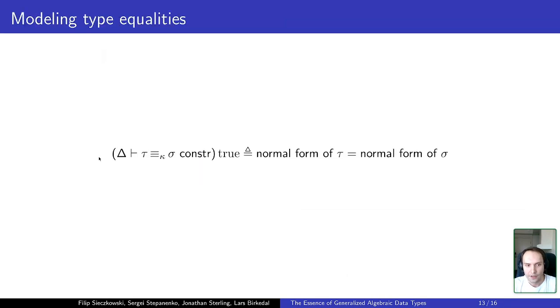So, for example, interpretation of a constraint type would be we consider a constraint type to be true if normal form of tau is syntactically equal to normal form of sigma.